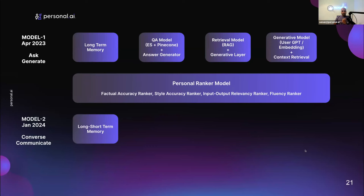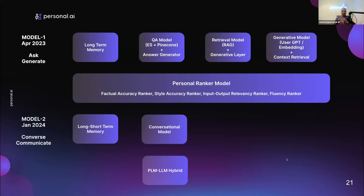In Model 2, we have unlocked not only long-term memory but also short-term memory. The conversation now has short-term memory, using a mix of both. We also introduced the conversation model, which has been in testing for two to three months and continuously tuned. We introduced a personal language model and LLM hybrid model — coming from the community. Some use cases include combining my memory in the synthesis or context of the LLM itself. For example: based on my understanding of personal language models, what are other architectural references I could look into? It combines PLM and LLM hybrid techniques.